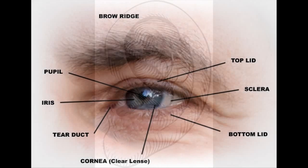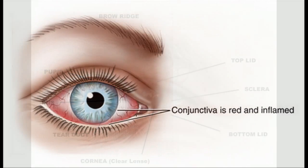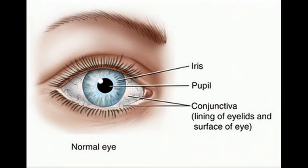No discharge from ears. Eyes: perrla, sclera white, iris dark brown — or whatever color it is — pupil 4 mm, no conjunctivitis, and conjunctiva pink.